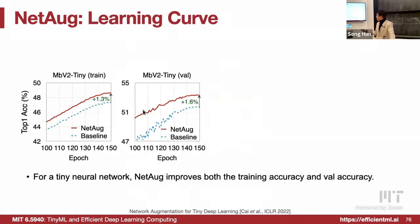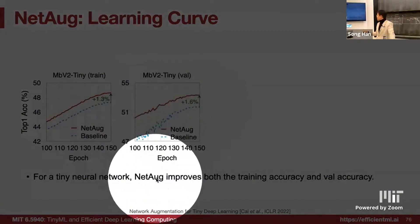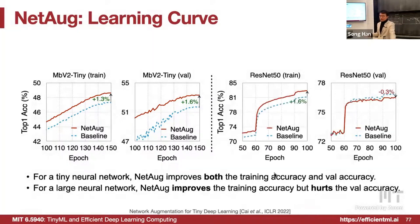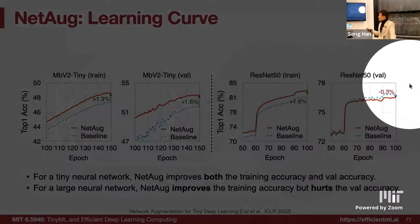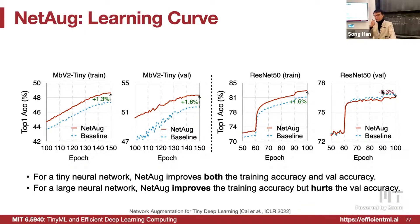At each step we can sample different sizes of the network — sometimes a larger model, sometimes a smaller model. What doesn't change is the inner part: it always shares the same weights with the original small model. As a result, the learning curve shows improvement in both training accuracy and validation accuracy for the tiny model. But for the large model, it actually didn't help — it hurt the accuracy in validation. This means the large model already has a pretty big capacity, doesn't suffer from underfitting, but overfitting. They should augment the data, not the model.